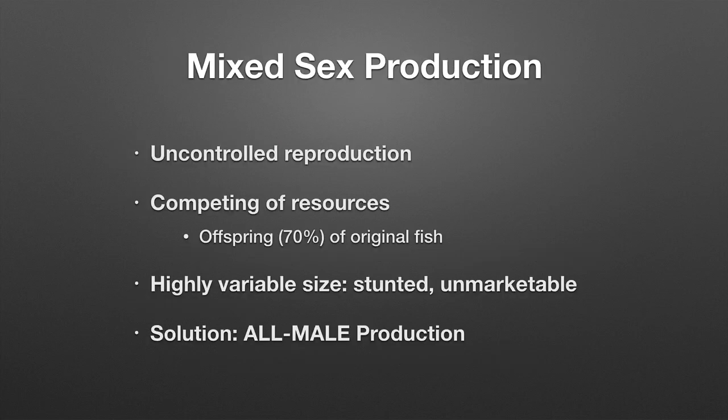This early maturation is a huge problem in mixed sex production. Mixed sex production, which includes both males and females, has an inherent weakness: there will be uncontrolled reproduction, competition for resources, and sometimes as much as 70 percent of fish harvested are offspring. This results in highly variable size at the end of the growing season, and fish may be stunted and unmarketable.